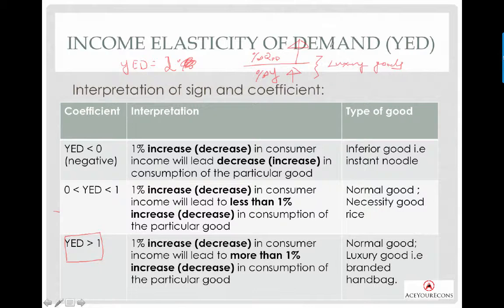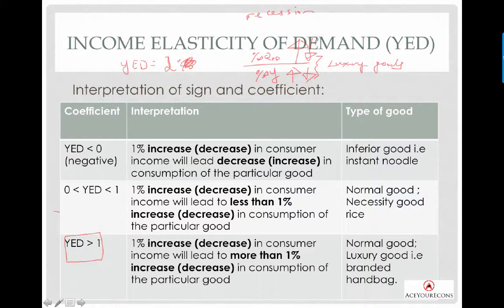To put it in layman's terms, if your parents give you more pocket money, you want to eat out more often, buy an iPhone, or buy a Gucci bag. These are luxury goods. Similarly, during an economic recession — when everybody experiences a fall in income and loses jobs — demand for luxury goods falls. You wouldn't want to buy a Gucci bag or eat out so often. So when YED is greater than one, it means the good is a luxury good.